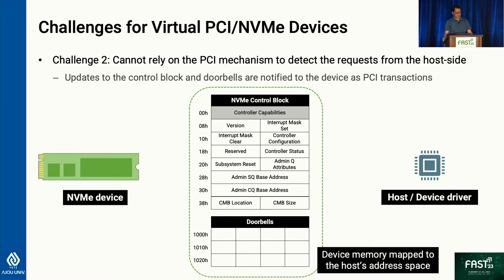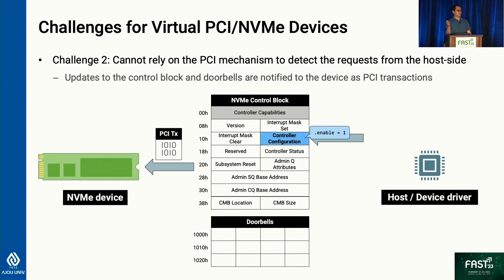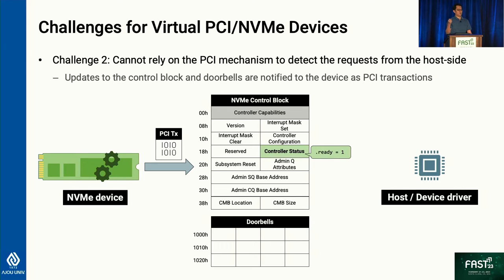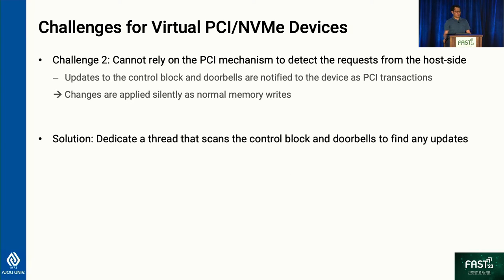The next challenge is that we cannot rely on the PCIe mechanism to detect requests from the host side. With real devices, the PCI device asks the PCI root complex to map its memory to the host's address space. When the host device driver writes data to that area, the write is translated into a PCIe transaction and delivered to the device. Since we don't have the actual device, writes to those control blocks or doorbells need to be detected differently. We dedicate a thread — called the dispatcher — that keeps scanning these control blocks and doorbells to find any updates.